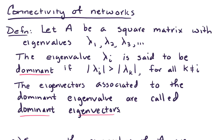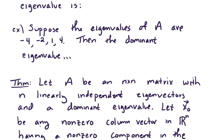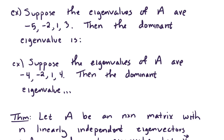Let's move on to an example. Suppose that the eigenvalues of A are -5, -2, 1, and 3. Then the dominant eigenvalue is -5, because the absolute value of 5 is strictly greater than all of the other values. For a second example, suppose that the eigenvalues of A are -4, -2, 1, and 4. Then the dominant eigenvalue does not exist, because there is not one particular eigenvalue that is strictly greater in magnitude than all others.